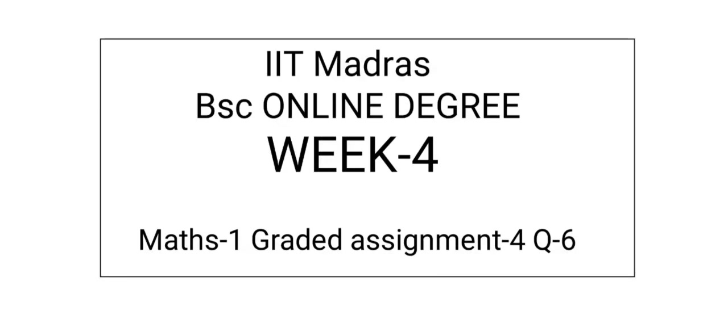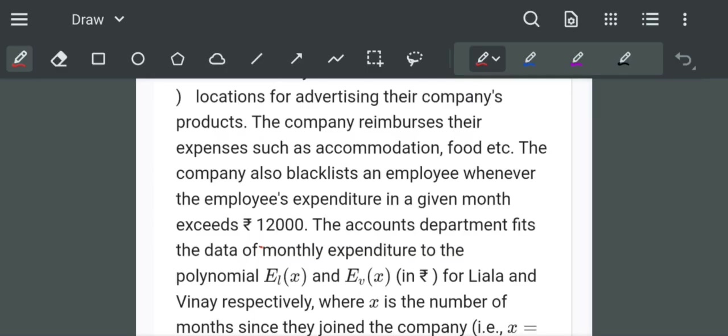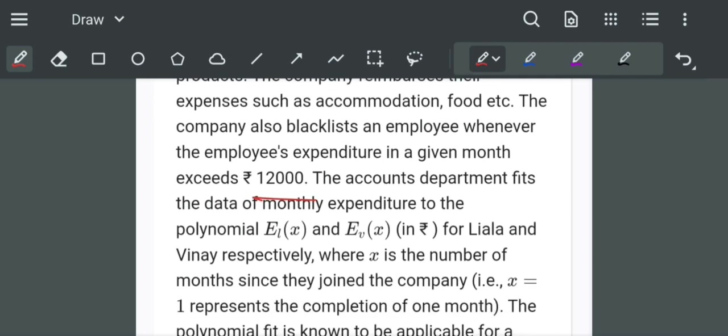Hello everyone, in this video we are going to discuss Week 4 mathematics graded assignment question number 6. In this question, the company blacklists an employee whenever the employee's expenditure in a given month exceeds ₹12,000. The accounts department fits the data of the monthly expenditure to polynomials.